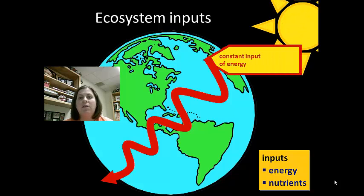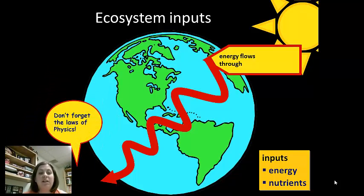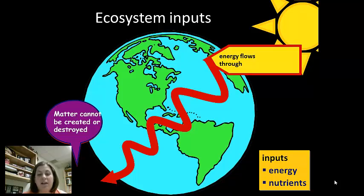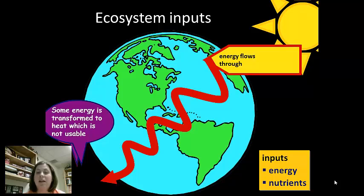It's important to note that we need a constant input of energy. Energy flows through the system. The first law of thermodynamics states that matter cannot be created or destroyed — it comes from the sun, and it's just going to be transformed. The second law of thermodynamics states that energy transformations result in some of the energy being converted into an unusable form — heat. So we can't use the heat that's given off through these conversions. This means that ecosystems must have a constant input of energy because most energy being transformed into heat dissipates into the environment, so the energy cannot be recycled.